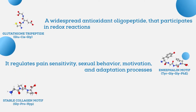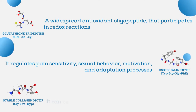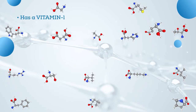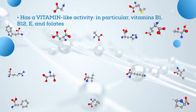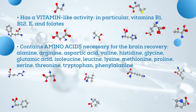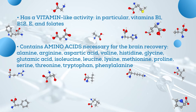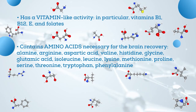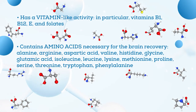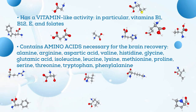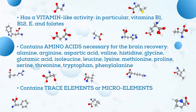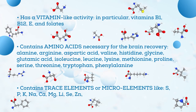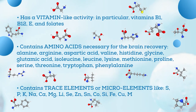A stable collagen motif of brain supporting proteins was also found in Cerebrolysin, which can be used to reconstruct damaged and synthesize new supporting collagen and other proteins. Cerebrolysin also has vitamin-like activity — in particular vitamins B1, B12, E, and folates. It contains amino acids including alanine, arginine, aspartic acid, valine, histidine, glycine, glutamic acid, isoleucine, leucine, lysine, methionine, proline, serine, threonine, tryptophan, and phenylalanine. It also contains trace elements such as sulfur, phosphorus, potassium, sodium, calcium, magnesium, lithium, selenium, zinc, tin, cobalt, silicon, iron, copper, manganese, and chromium.